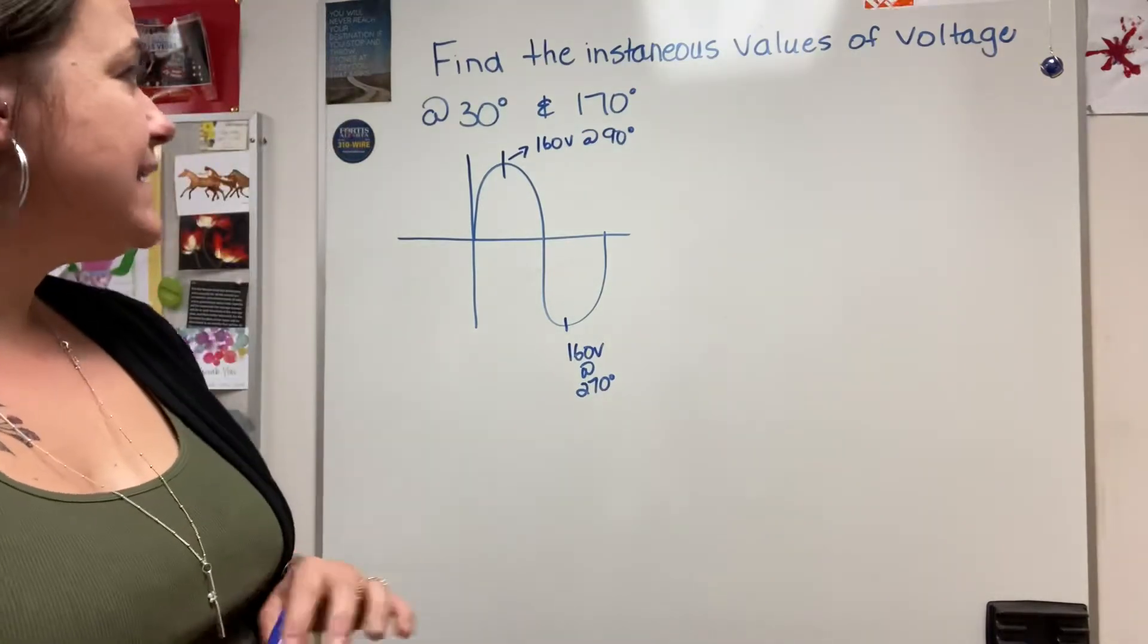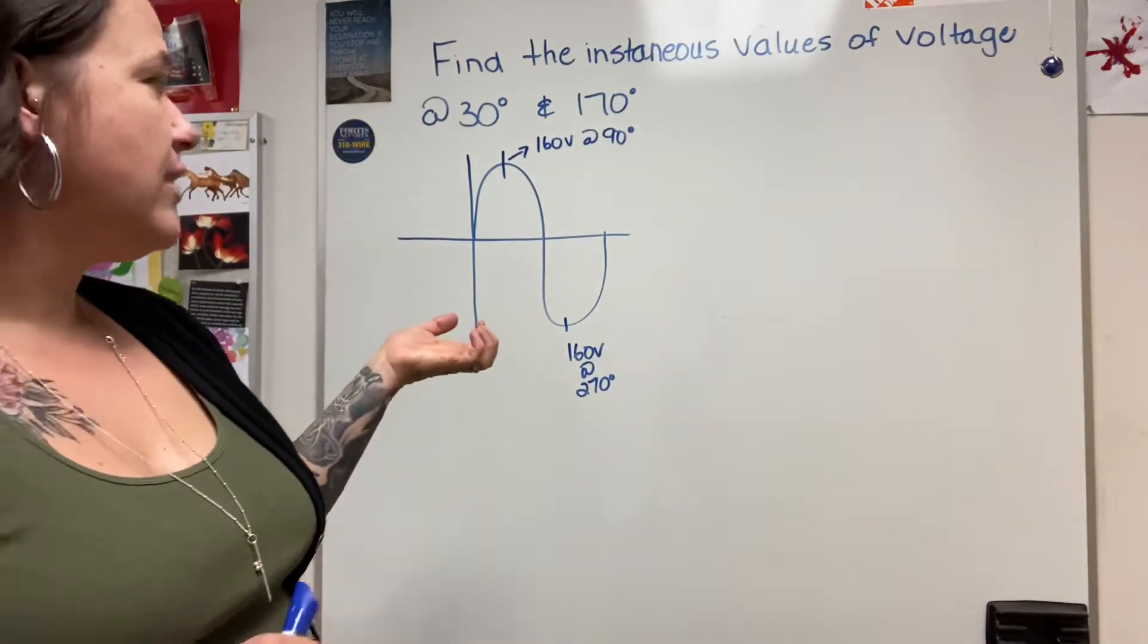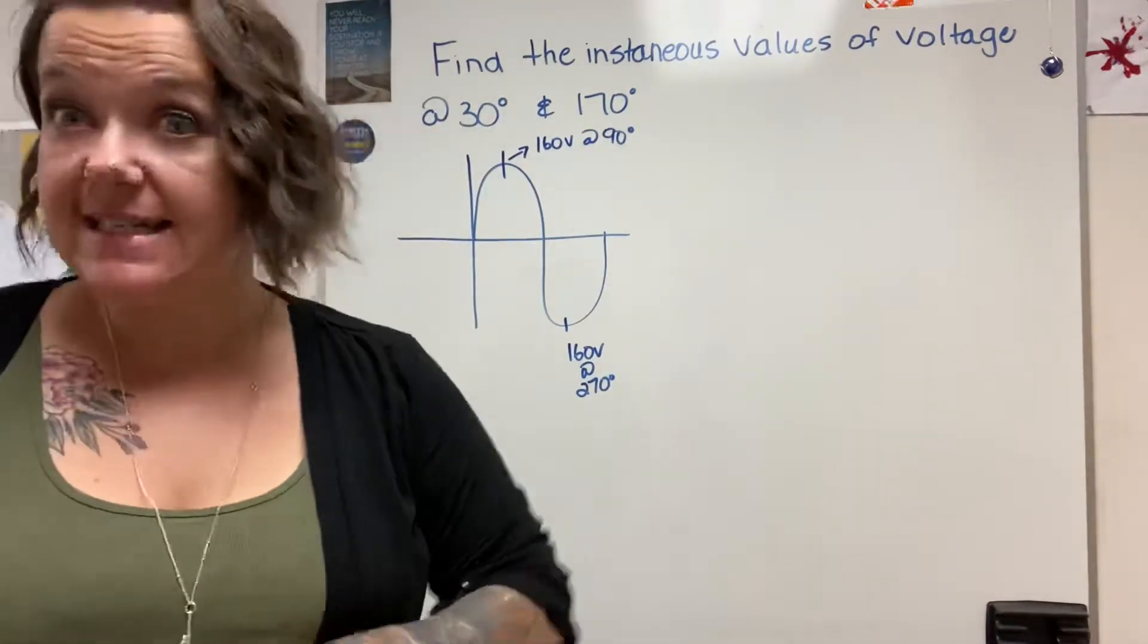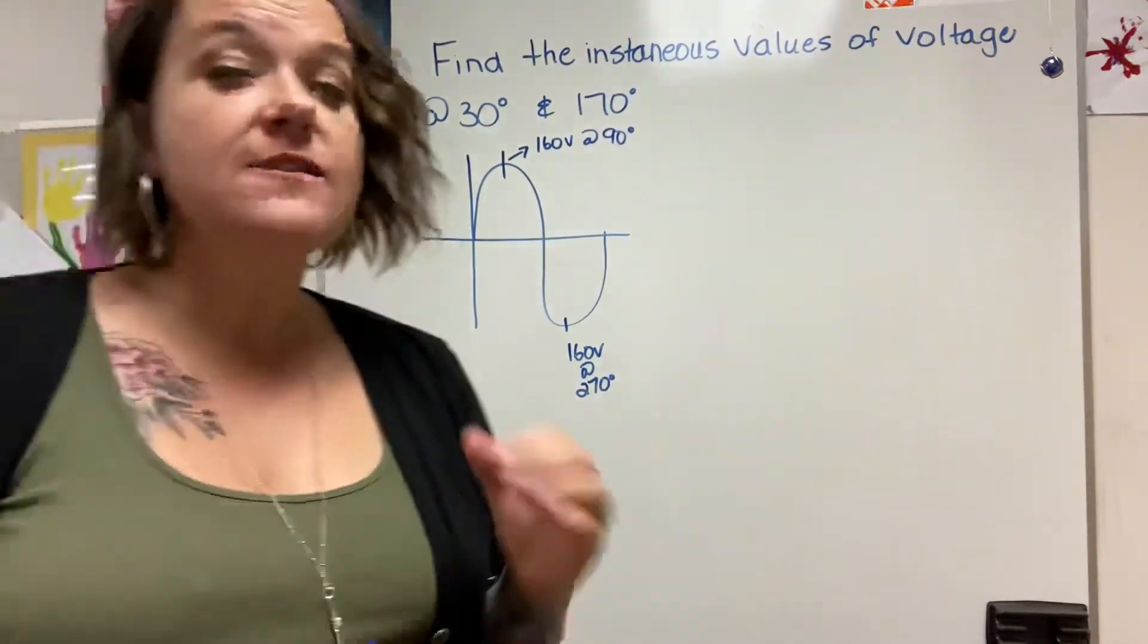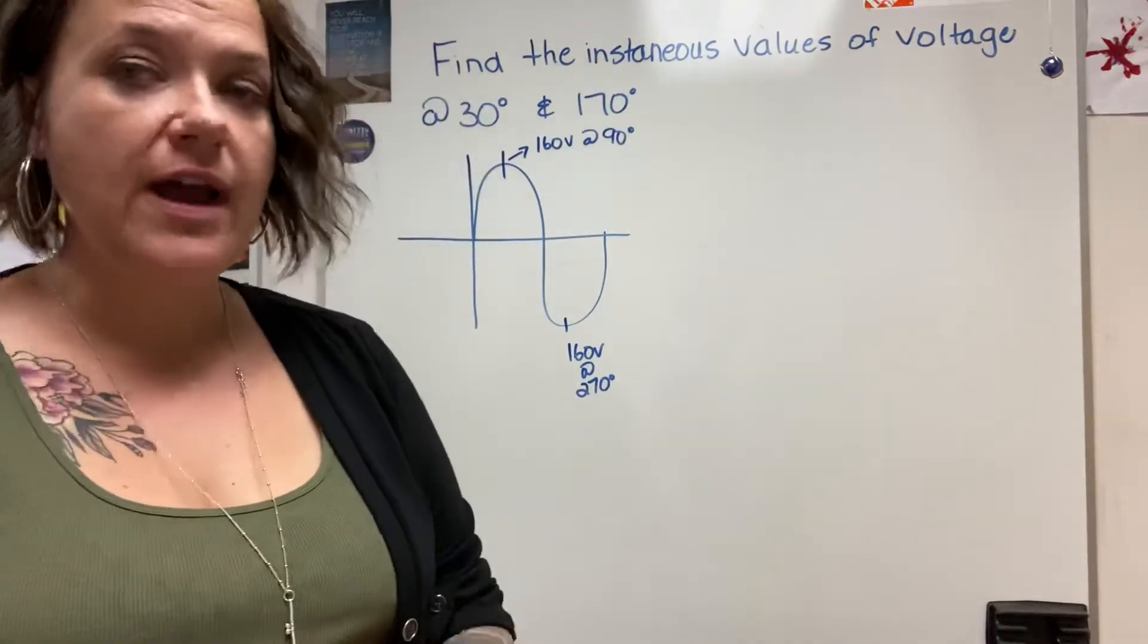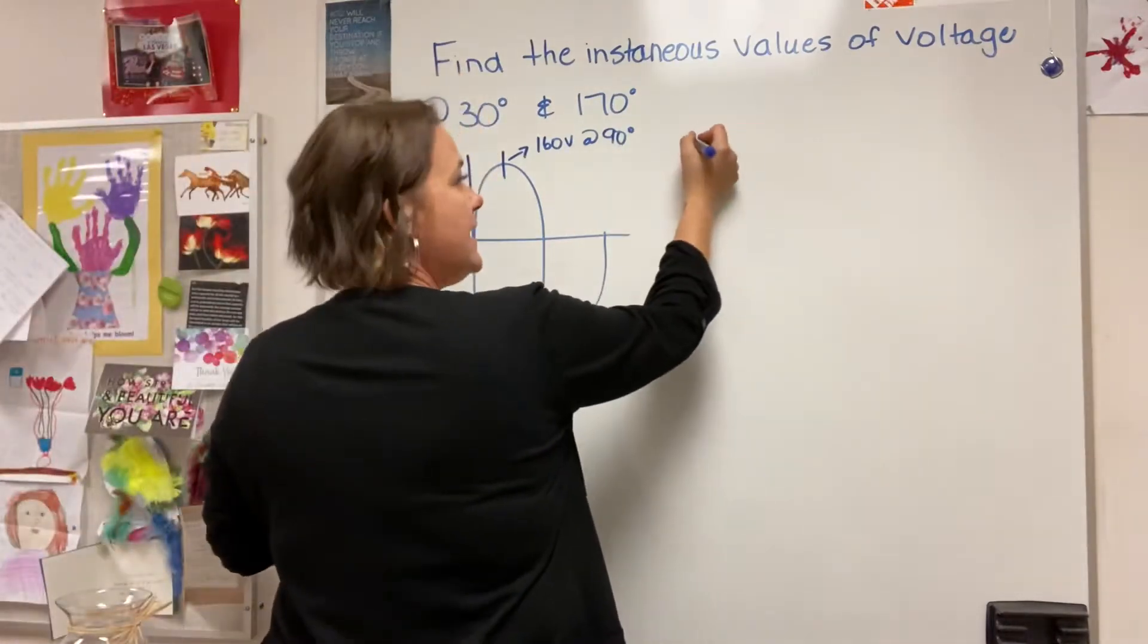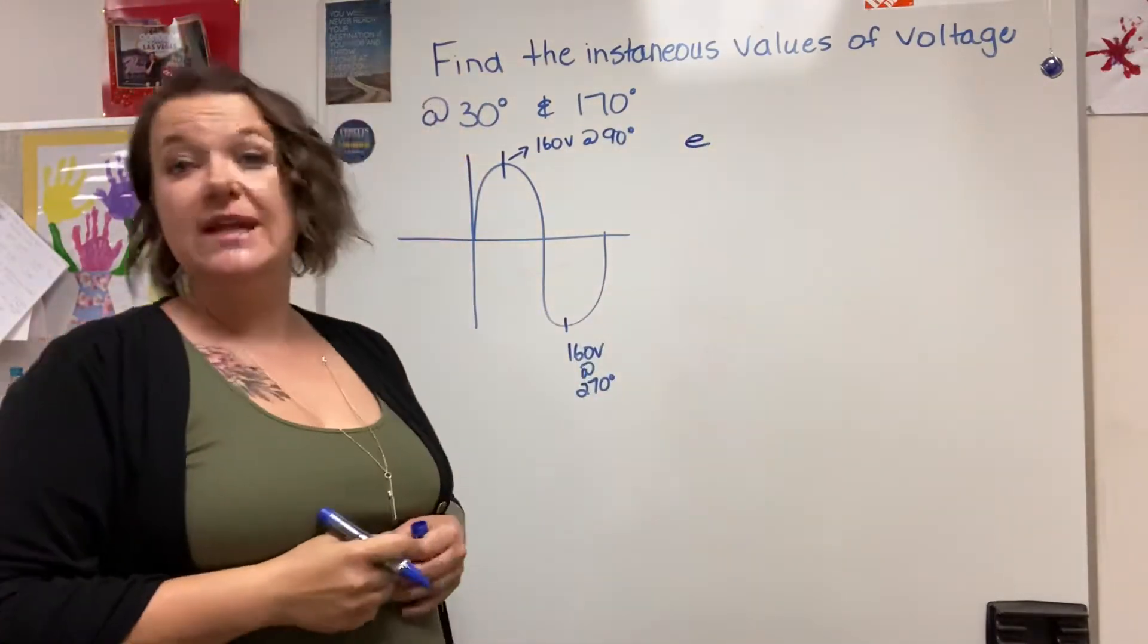Basically any voltage that's generated at anything other than maximum or peak would be considered an instantaneous value, and there is a formula that we use to find instantaneous. The lowercase e is the subscript for instantaneous.